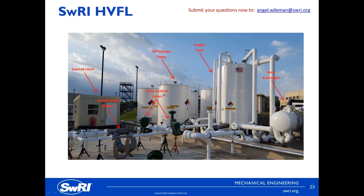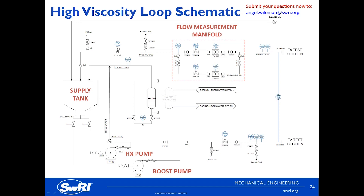Here's a diagram schematic of the high viscosity flow facility. The HVFL consists of two closed loops: a test section loop supplied by the booster pump, and a secondary loop which circulates test fluid through a heat exchanger and back into the supply tank to control fluid temperature — or in our case, viscosity — since viscosity and fluid temperature are intertwined.